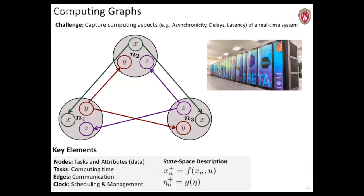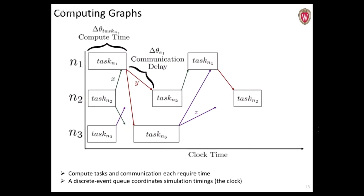We came up with a clean, cohesive state space description that describes when nodes do things and when edges do things — inspired by our background in control theory. Nodes and edges can be in different states and make transitions based on signals they receive. With every transition there's a corresponding change in the attributes of the node or edge. We can use this to manage the timing and behavior of the simulation, handling a lot of different cases that can come up in an asynchronous simulation in a very general way.